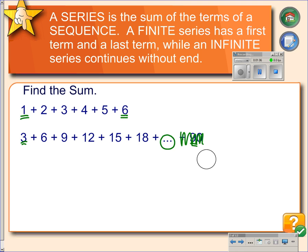So what we want to do with these series is find the sums of them. The first one, we could just add 1 plus 2 is 3, 3 plus 3 is 6, 6 plus 4 is 10, 10 plus 5 is 15, 15 plus 6 is 21. So the answer is 21 here.